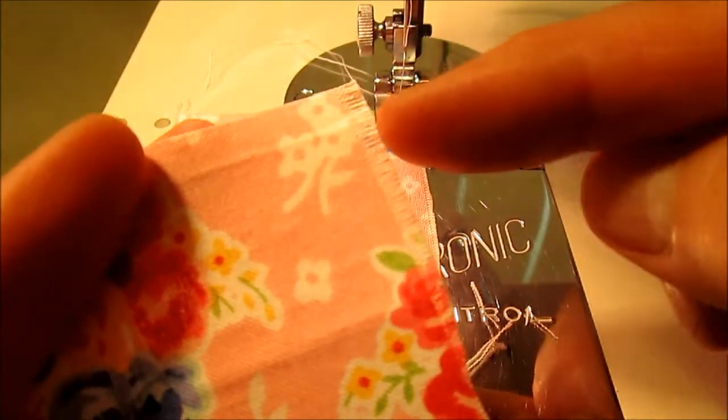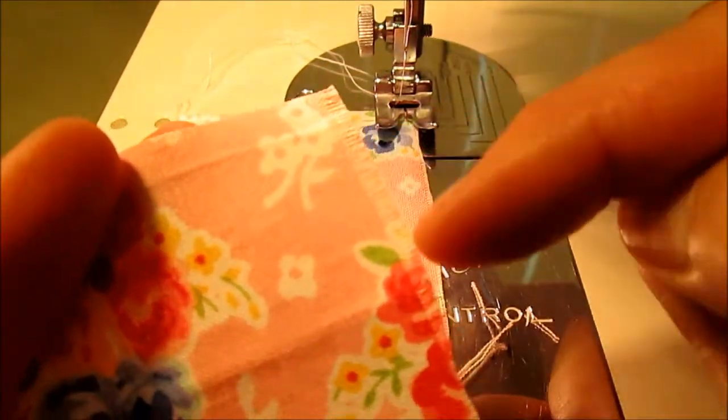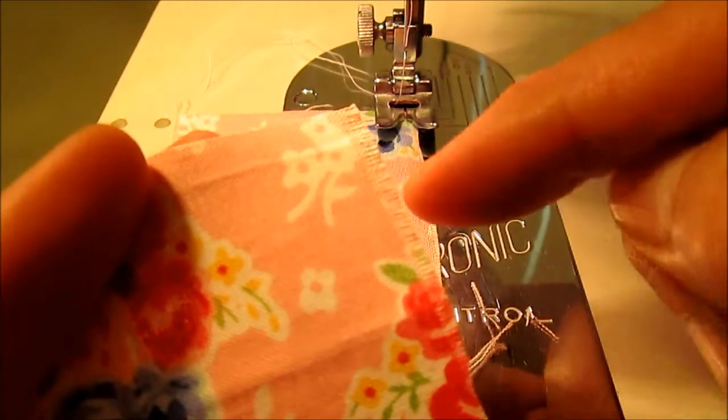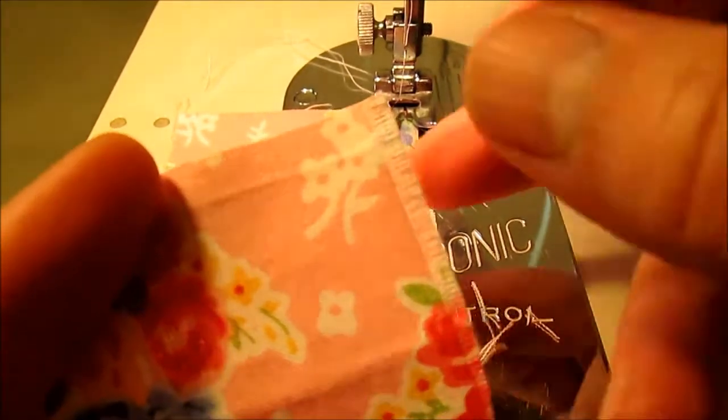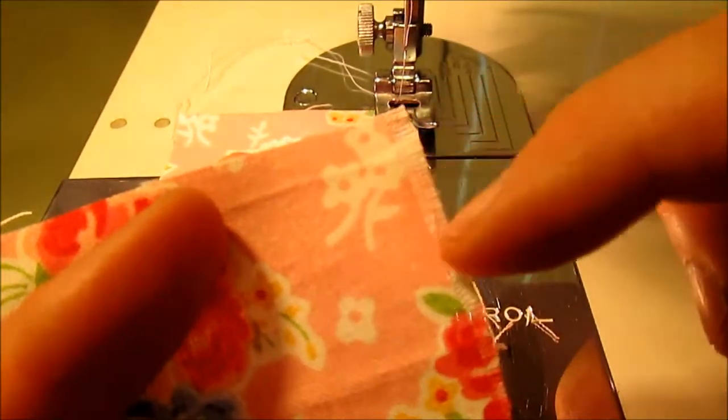What happens is you have sewn your seam and it starts to fray a little bit, and then you put it in the wash and wash it and it just comes unraveled.